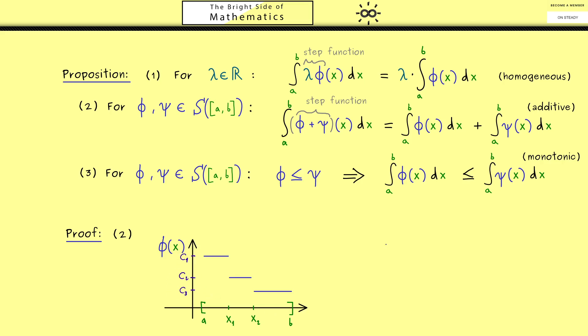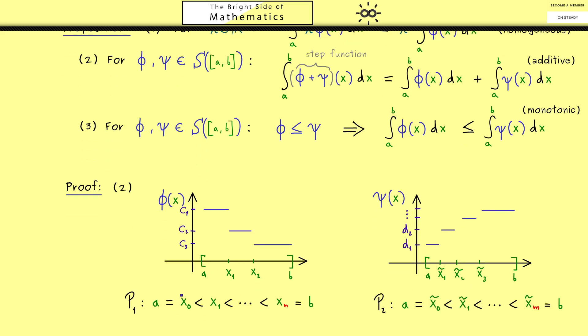A similar visualization I can also give you for the step function ψ. For example it could look like this. Also here we can choose a partition, but now we use the letters x-tildes for this. On the y-axis I would use d₁, d₂ and so on. With these sketches we have already fixed some notations. In particular we have a partition P₁ that works for φ and a partition P₂ that works for ψ.